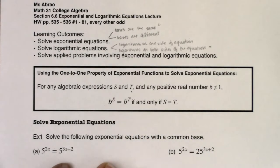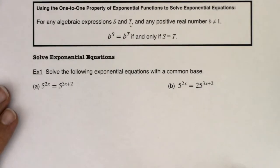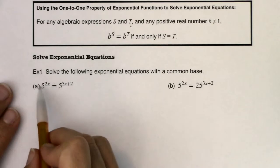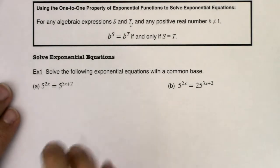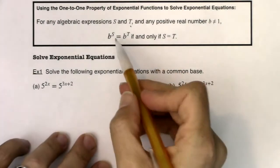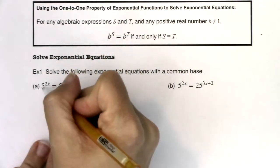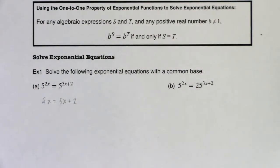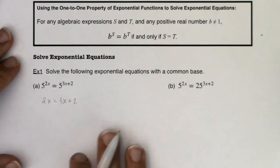Let's play that out in example one. We're going to solve exponential equations that have a common base. I have 5 to the 2x on the left and 5 to the 3x plus 2 on the right. Take note that the bases are the same — the base on the left is 5 and the base on the right is also 5. So by our property, if our powers have the same base, then the exponents must also be the same. We can reduce this equation down to 2x equals 3x plus 2.